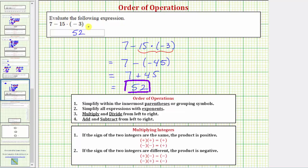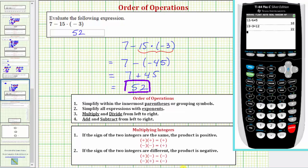Let's also verify this on the graphic calculator. So we'll enter 7 minus 15 times, and then we have a negative 3 in parentheses. Enter, and notice how we do get a value of 52. I hope you found this helpful.